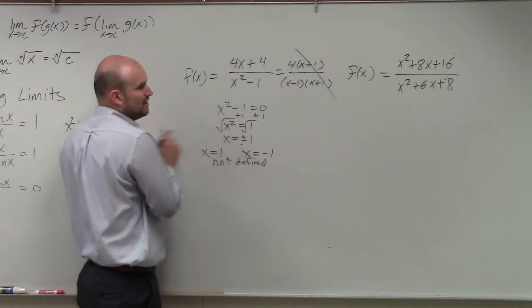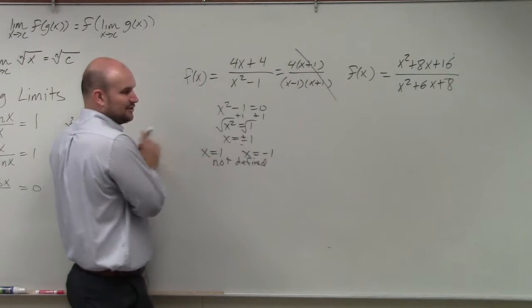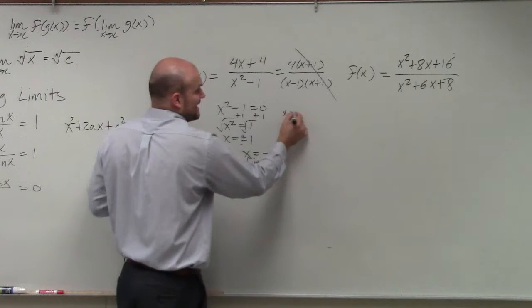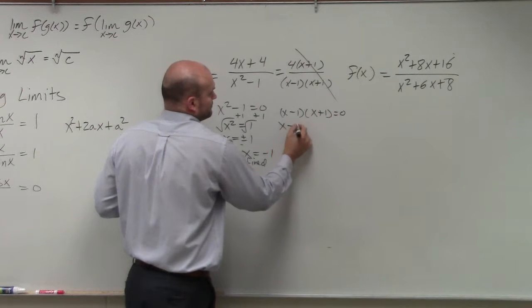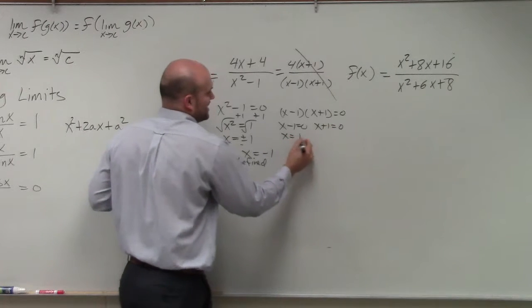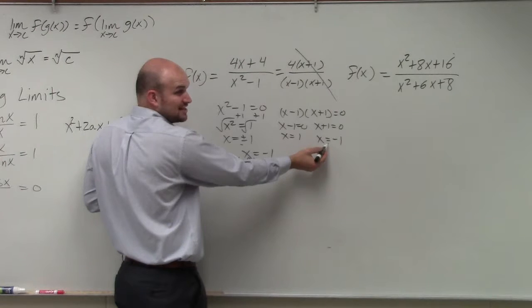x plus 1, though, gives you what? Zero. Which one of these discontinuities is x plus 1? The negative 1, right? Because if you were to set these actually both equal to zero, x would equal positive 1, x equals negative 1. So x plus 1, the discontinuity is actually x equals negative 1.